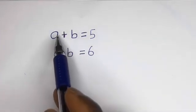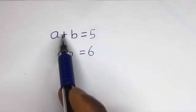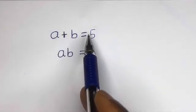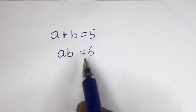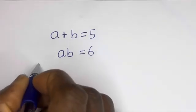Hello. How to solve for a and b in this equation: a plus b is equal to 5, and a times b is equal to 6. Solution.